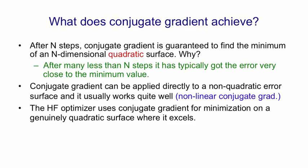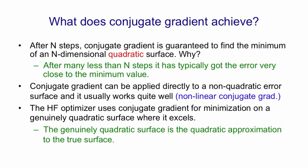The Hessian-free optimizer uses conjugate gradient for minimization on a genuinely quadratic surface, and that's what conjugate gradient is best at — it works much better for that than for a non-linear surface. This genuinely quadratic surface that the Hessian-free method is using it for is the quadratic approximation to the true surface made by the Hessian-free method. So it makes that approximation, uses conjugate gradient to get close to a minimum for the first approximation, then makes a new approximation to the curvature and does it again.